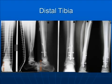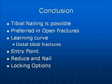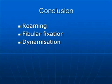In conclusion, tibial nailing is possible and is preferred in open fractures. There is a definite learning curve for distal tibial fractures — make a plan and move forward. Failing to plan is planning to fail. Make a wonderful entry point. Reduce the fracture, then nail. Use your locking options as per the nail. Reaming versus not reaming is questionable — reamed and unreamed are equally good. Fibular fixation at the same level — always do it. Dynamization should not begin with distal tibial fractures; these require longer non-weight-bearing than normal tibial fractures.